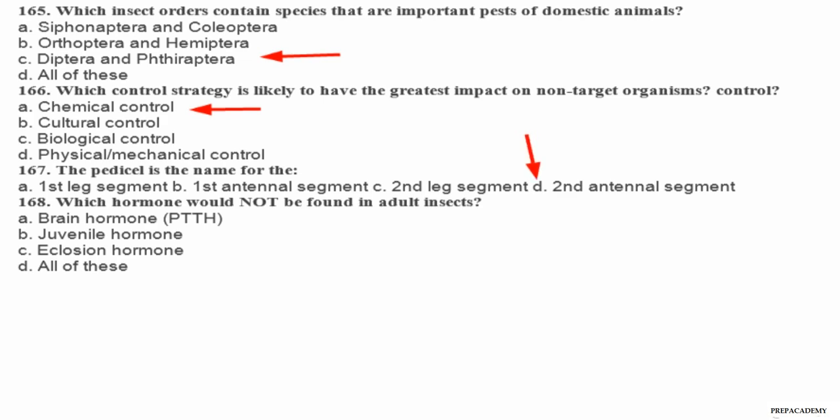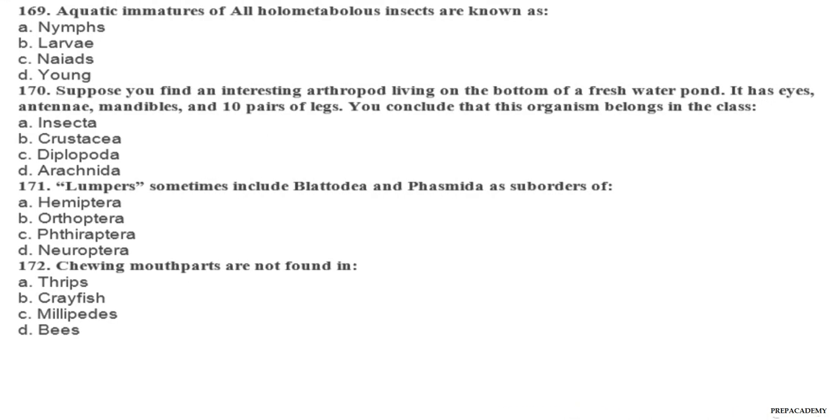Question 168. Which hormone would not be found in adult insects? A brain hormone (PTTH), B juvenile hormone, C eclosion hormone, D all of these. Question 169. Aquatic immatures of all holometabolous insects are known as: A nymphs, B larvae, C naiads, D young. Question 170. Suppose you find an interesting arthropod living on the bottom of a freshwater pond. It has eyes, antennae, mandibles, and 10 pairs of legs. You conclude that this organism belongs in the class: A Insecta, B Crustacea, C Diplopoda, D Arachnida.